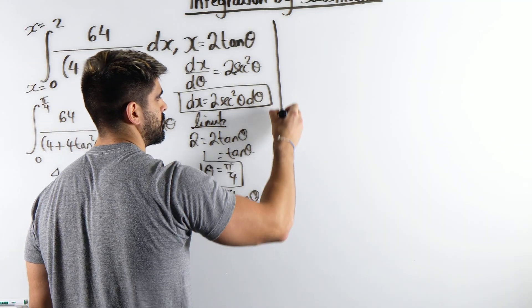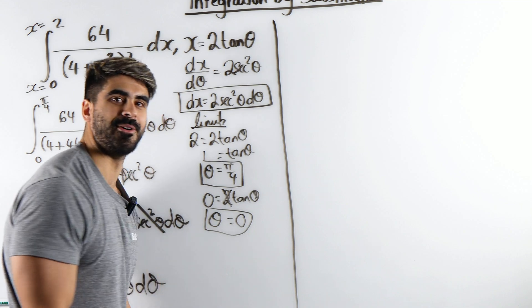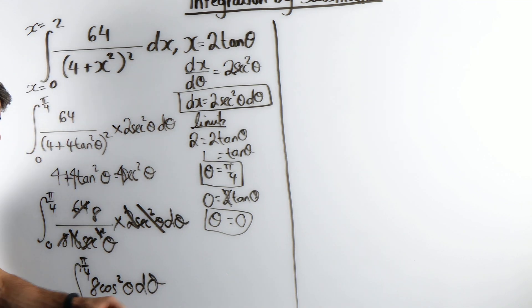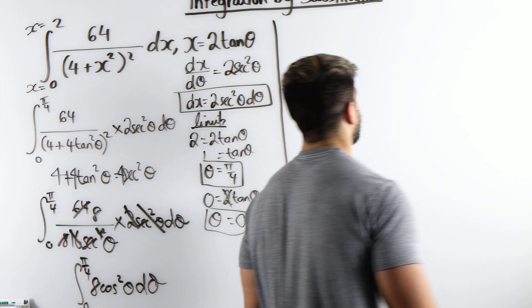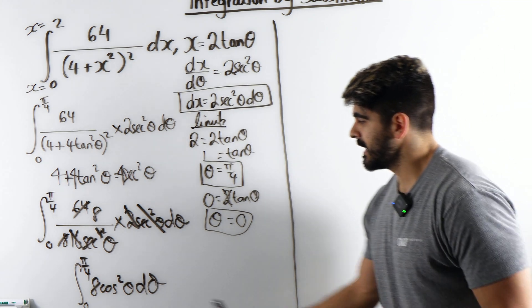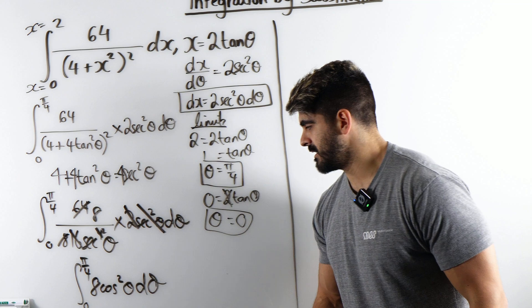How do we integrate that? Well, we can't is the simple answer. Because it's cos squared, we can't integrate that. The way we integrate it is by using our double angle IDs.